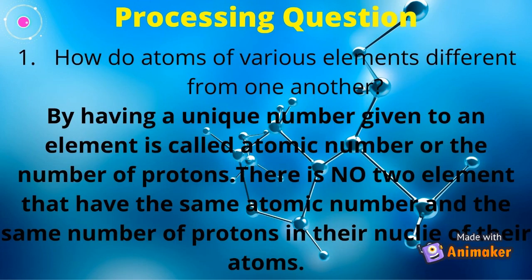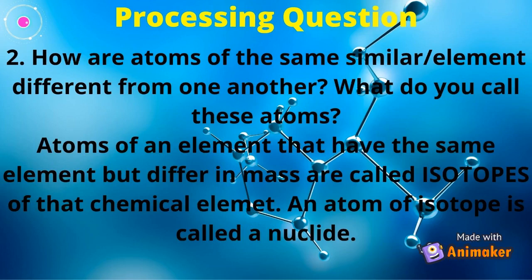Question number 1: How do atoms of various elements differ from one another? By having a unique number given to an element called the atomic number, or the number of protons. No two elements have the same atomic number or the same number of protons in the nuclei of their atoms. Question number 2: How are atoms of the same element different from one another? What do you call these atoms? Atoms of an element that have the same element but differ in mass are called isotopes of that chemical element. An atom of an isotope is called a nuclide.